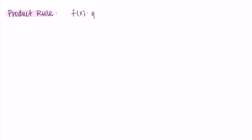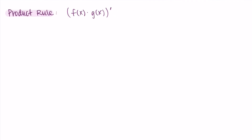In this video we are talking about the product rule. I'm not going to prove the product rule or explain why it is the way it is — I'm just going to go over how we use it. The product rule is used when we're taking the derivative of a product of functions, so when we're multiplying two functions together. If we have a function f times another function g and we're taking the derivative (f times g) prime, we might be tempted to just take the derivative of f and multiply it by the derivative of g, but unfortunately it just isn't this simple.